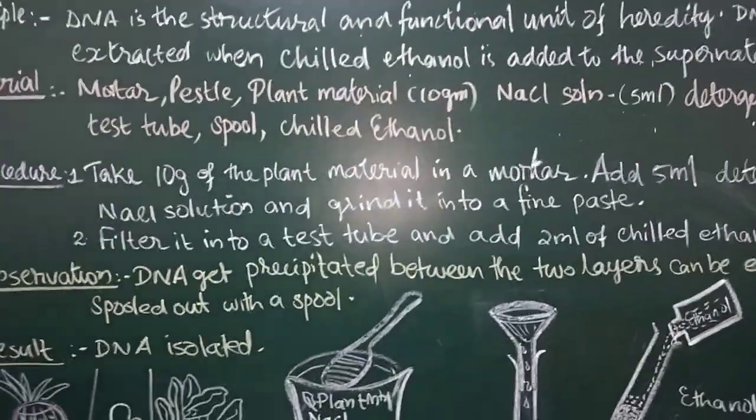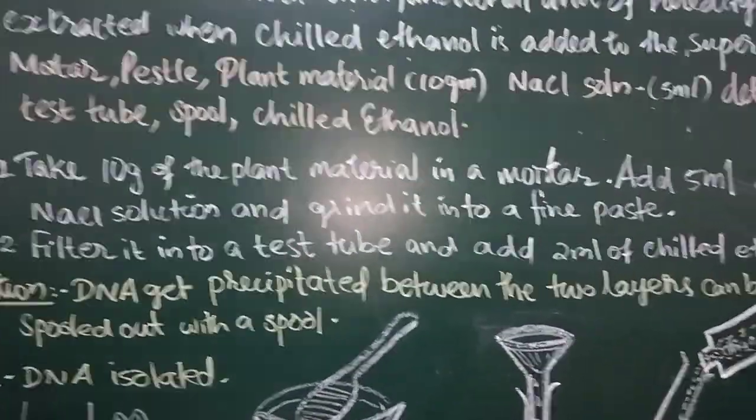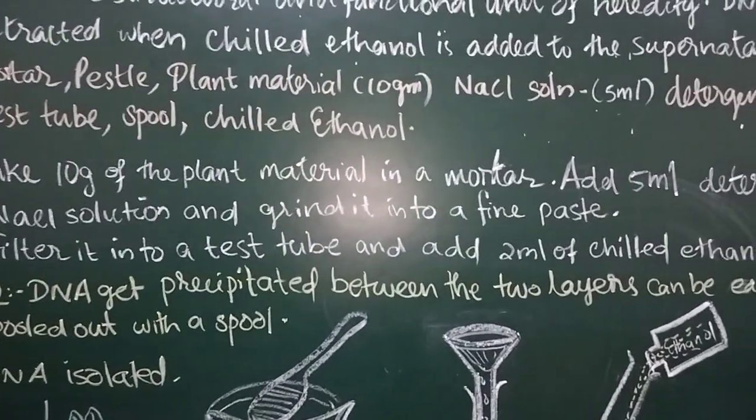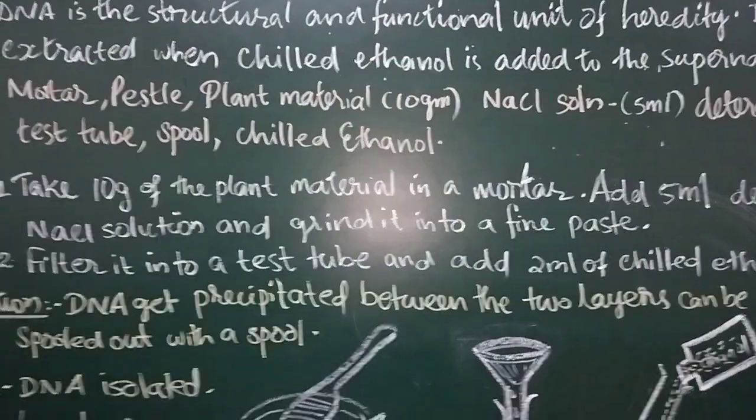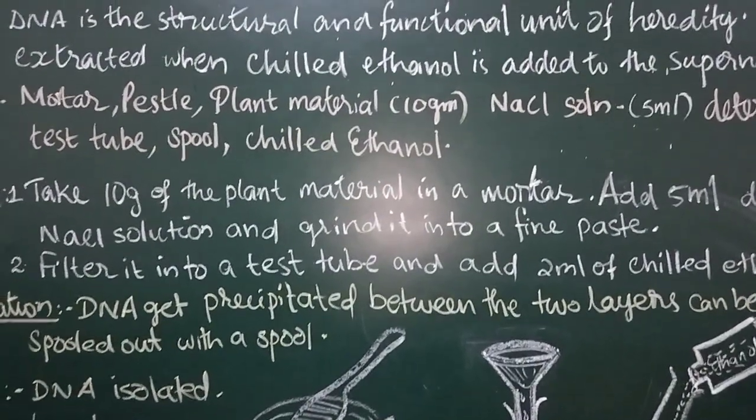Procedure is very simple. Take 10 grams of the plant material in a mortar. Add 5 ml of detergent solution and sodium chloride solution and grind it well into a fine paste. Filter it into a test tube.